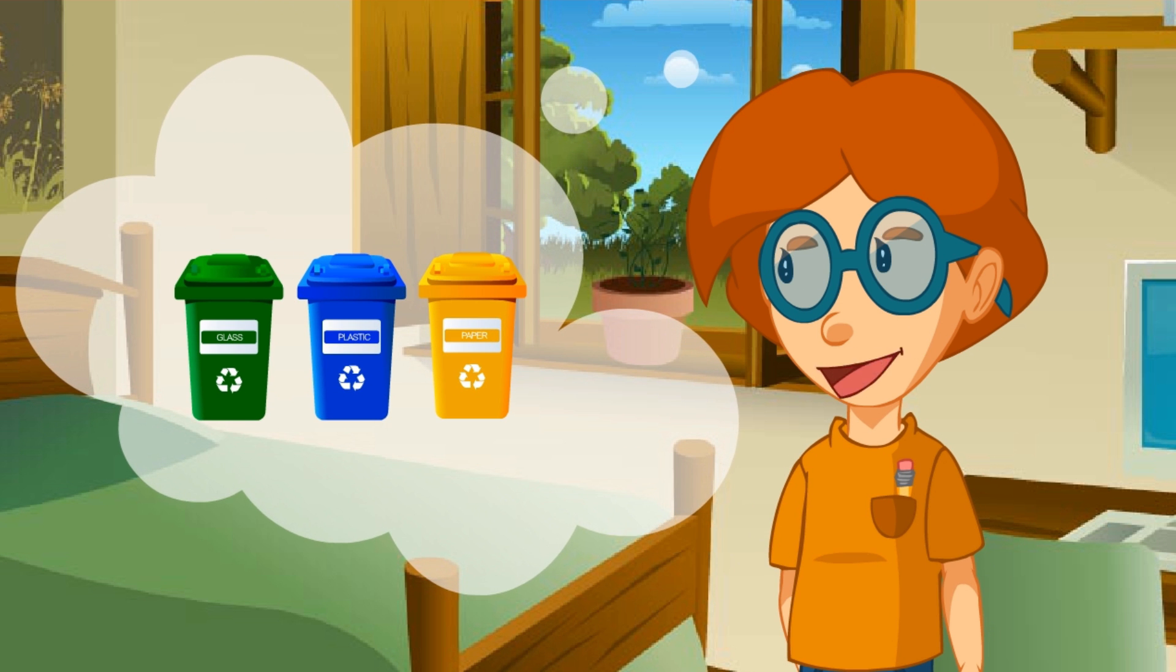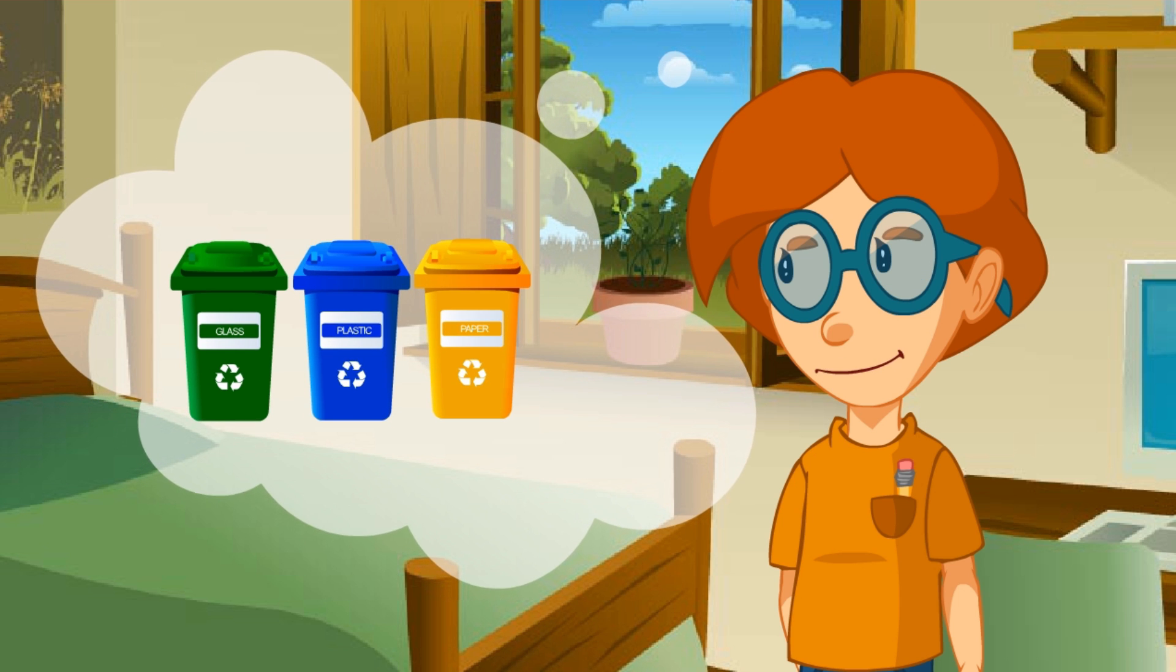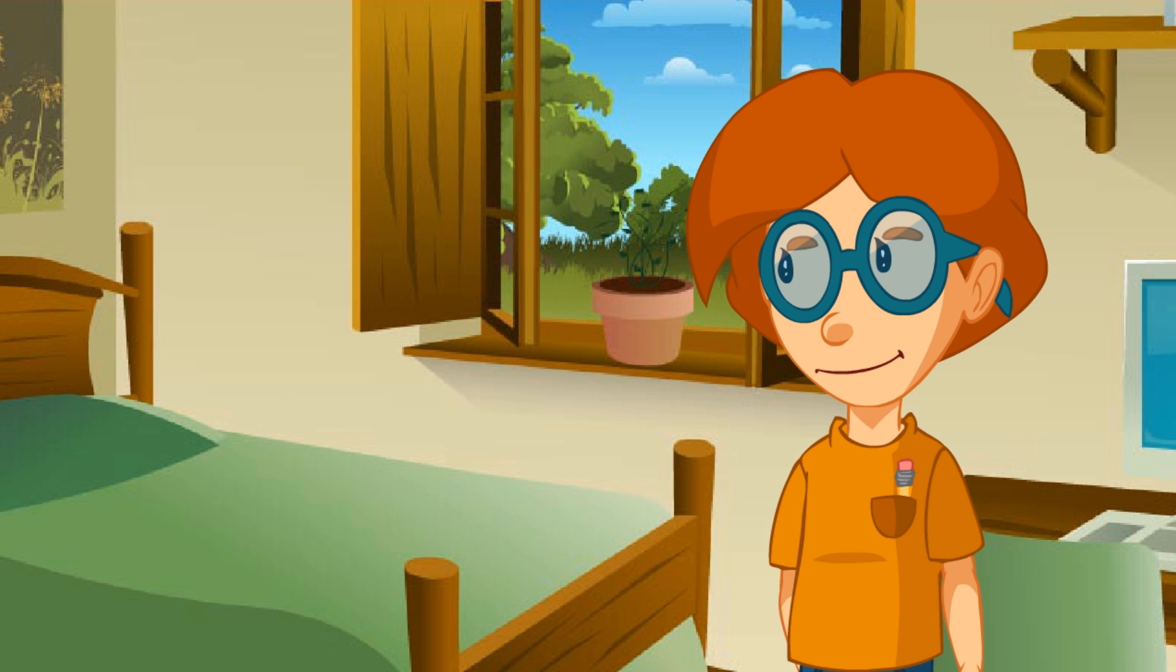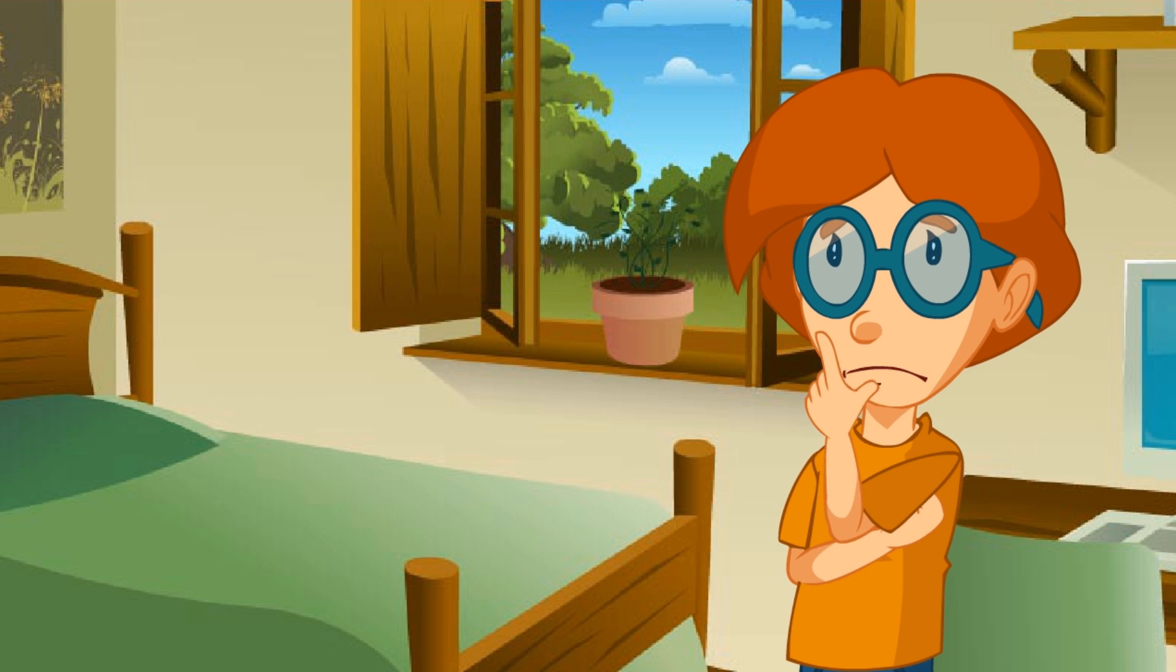Now I understand why one was labeled glass, the other plastic, and the third one paper. That's the first step in recycling, to classify the waste. Now I remember that each of those dustbins had a symbol.